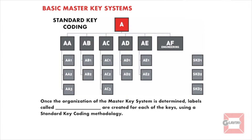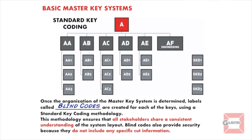Once the organization of the master key system is determined, labels called blind codes are created for each of the keys using a standard key coding methodology. This methodology ensures that all stakeholders share a consistent understanding of the system layout. Blind codes also provide security because they do not include any specific cut information.